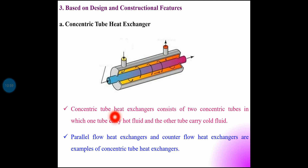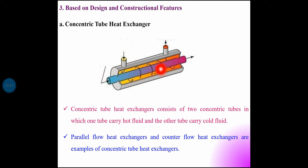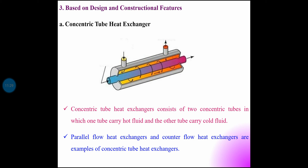A concentric tube heat exchanger consists of two concentric tubes, in which one tube carries hot fluid and the other tube carries cold fluid. Both tubes share the same axis. One tube carries hot fluid flow and the other carries cold fluid flow. Parallel flow and counter flow arrangements are examples of concentric tube heat exchangers.